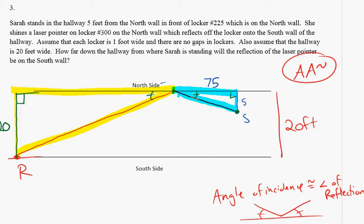If we want to know how far down the hall was that projection, really we need to know this whole distance. We know part of it's 75. We don't know this part. Let's call it X. If we can figure out the distance from locker 225 to all the way down to wherever, down the hallway to wherever the reflection happens on the south wall, we know how far down the hallway this reflection is. So really what we're looking for is X.